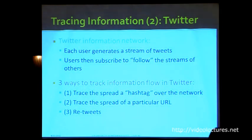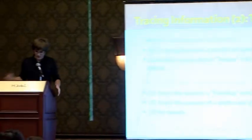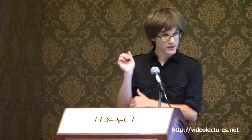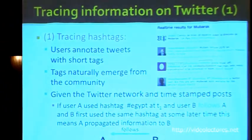The second way of tracing information — very popular lately — is to use Twitter. Twitter is an information network where each user generates a stream of 140-character tweets, and users can subscribe to follow streams of other users. There are three ways to track information flow in Twitter: tracing the spread of hashtags, tracing particular URLs, and the explicit forwarding mechanism called retweets. Hashtags are tags people put in front of a keyword — for example, hash Obama or hash Mubarak — and they emerge naturally from inside the network.